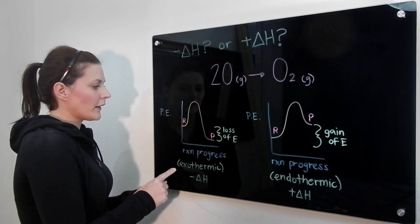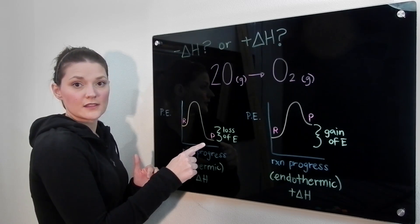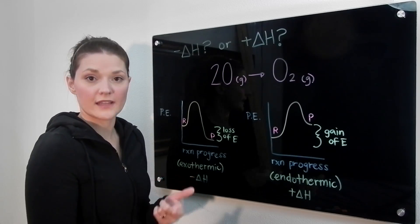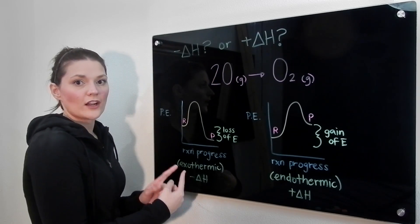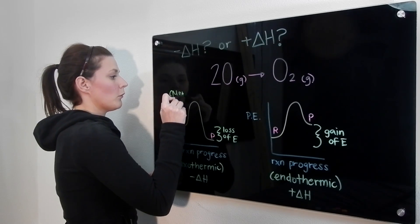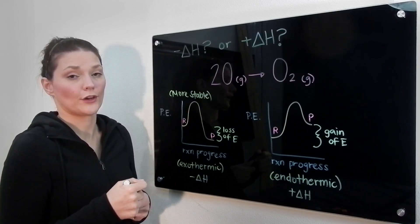In the exothermic case, the reactants have a higher overall energy than the products. Remember that whenever you are at a lower energy, you're more stable. So exothermic reactions provide us with a more stable compound. This one here would be more stable simply because of the lower energy.